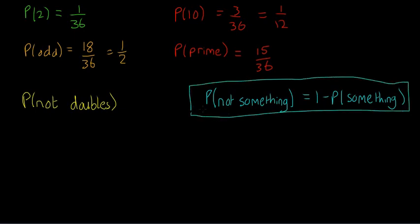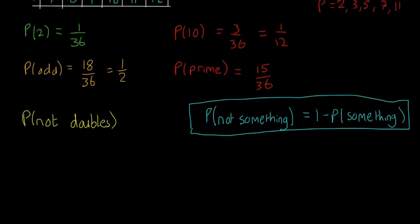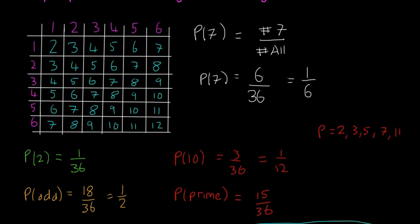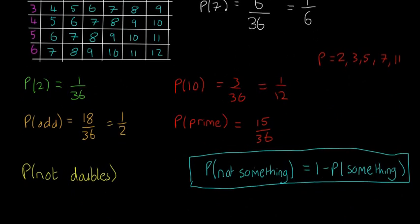So the probability of not doubles is equal to 1 minus the probability of doubles. For this example, doubles is when you roll a 1 and a 1, a 2 and a 2, a 3 and a 3, a 4 and a 4, a 5 and a 5, or a 6 and a 6. You could count up all the numbers that aren't doubles, but that'll take you forever. So it's much easier to find the probability of not doubles using this trick. In some cases it's impossible to do it any other way, so you do have to remember this.